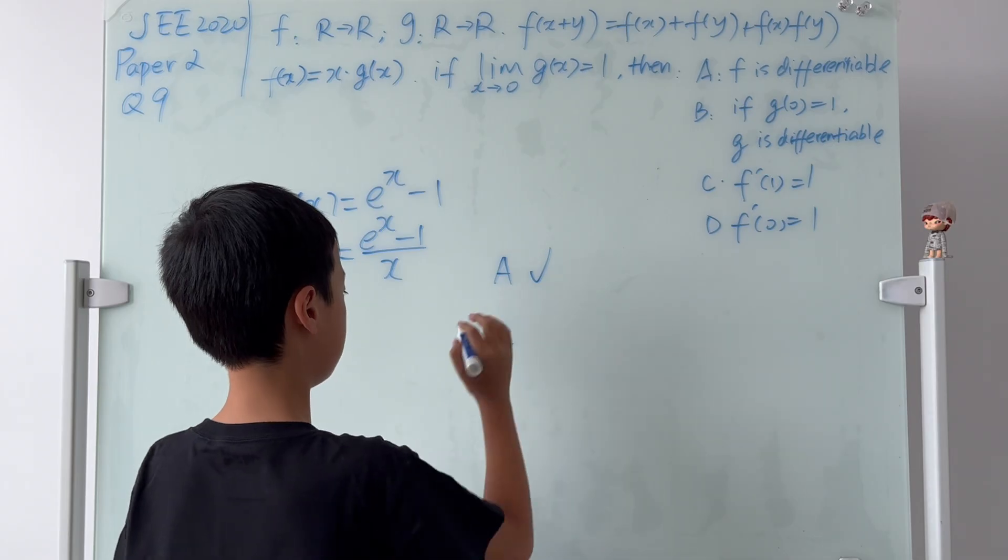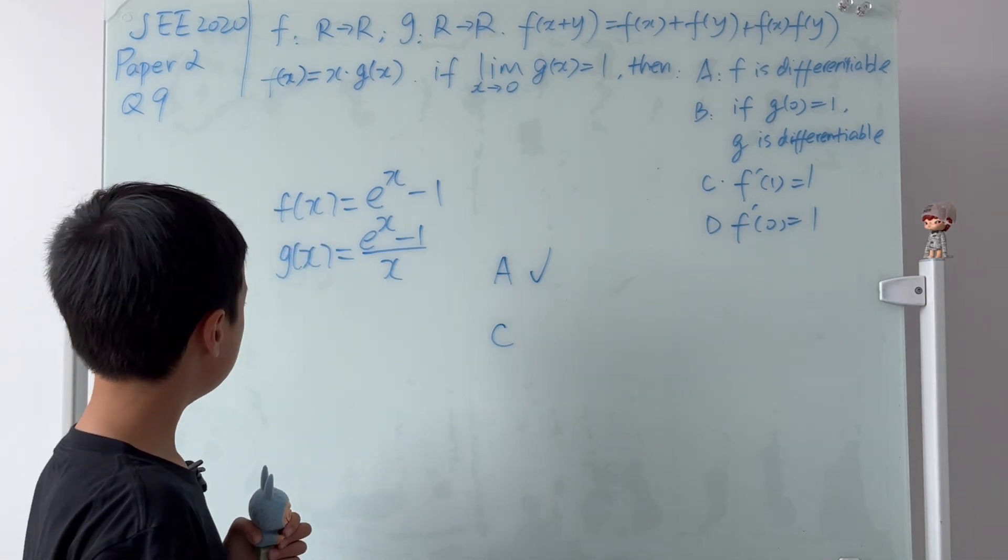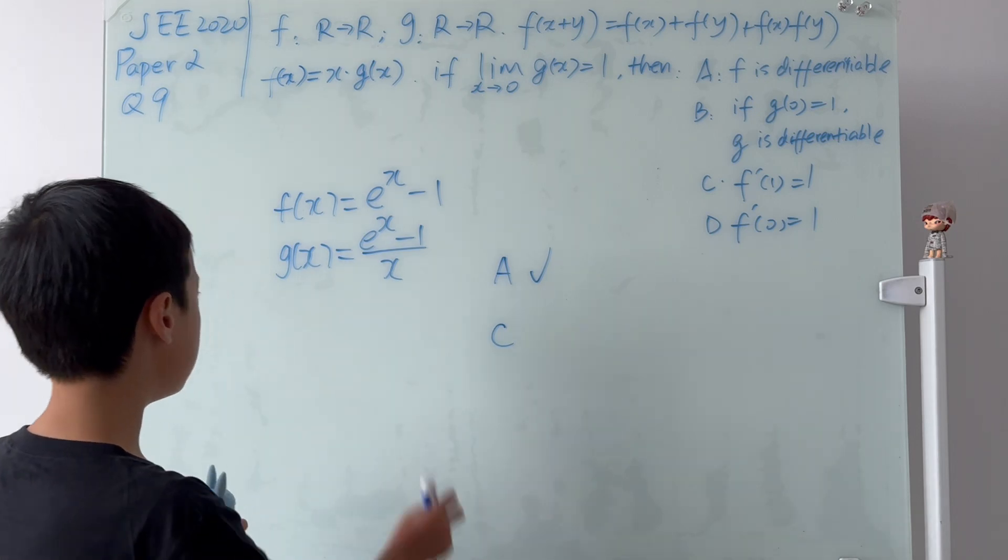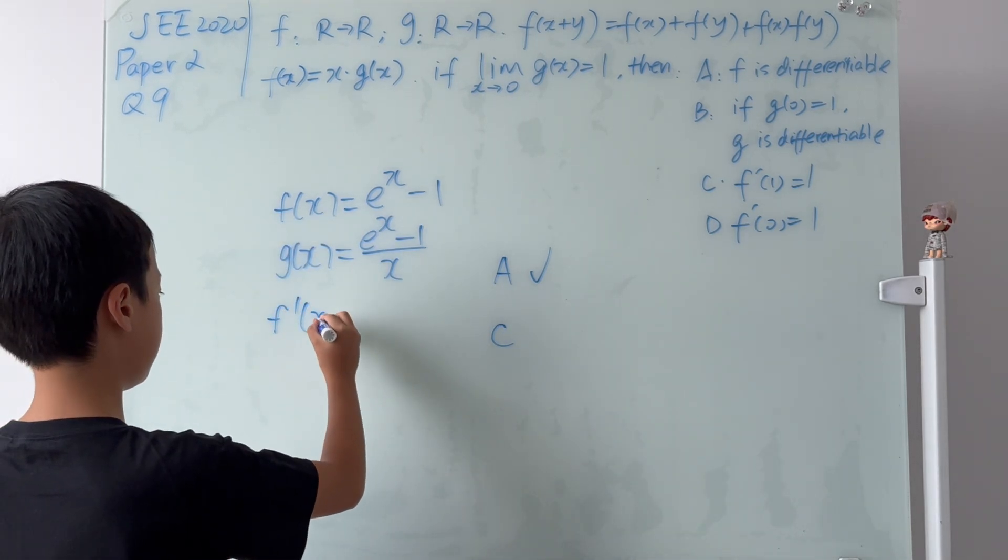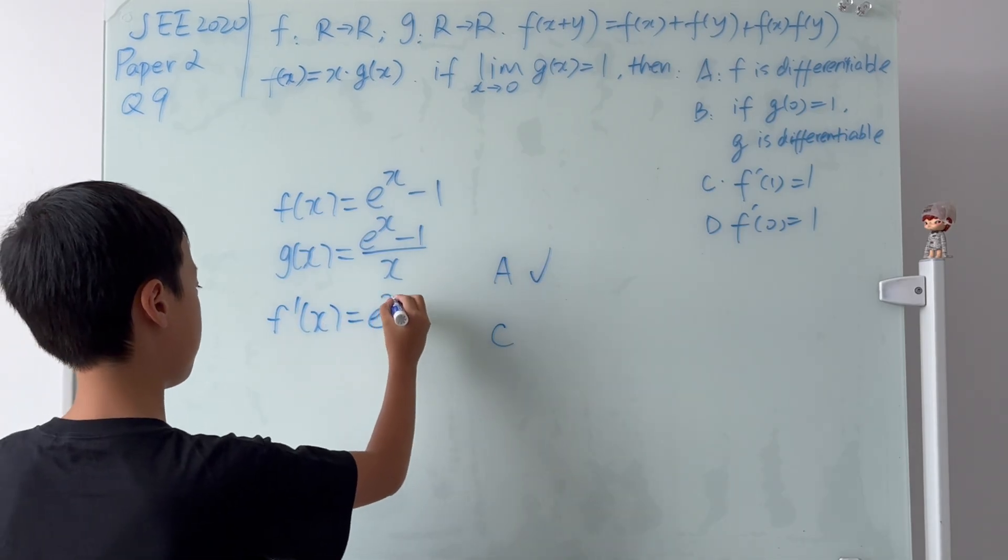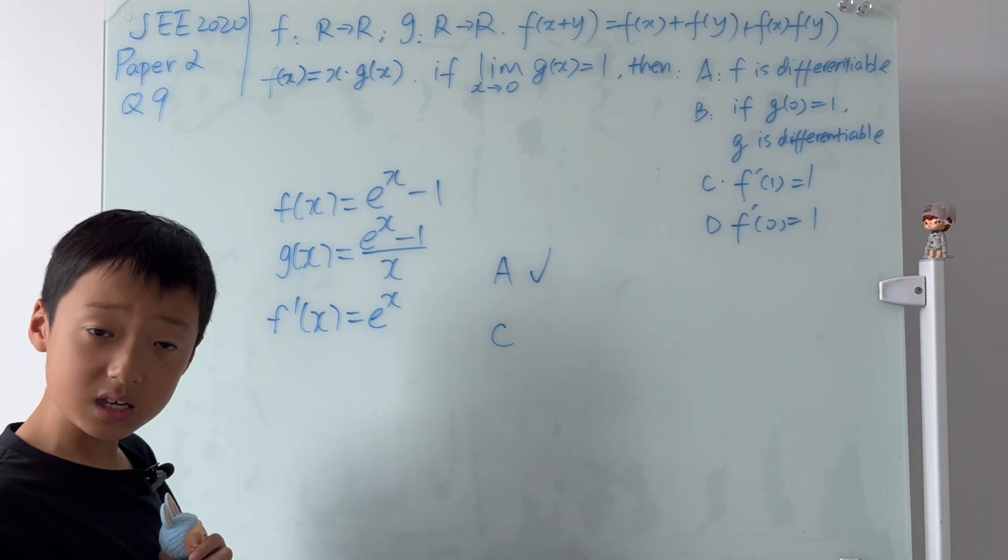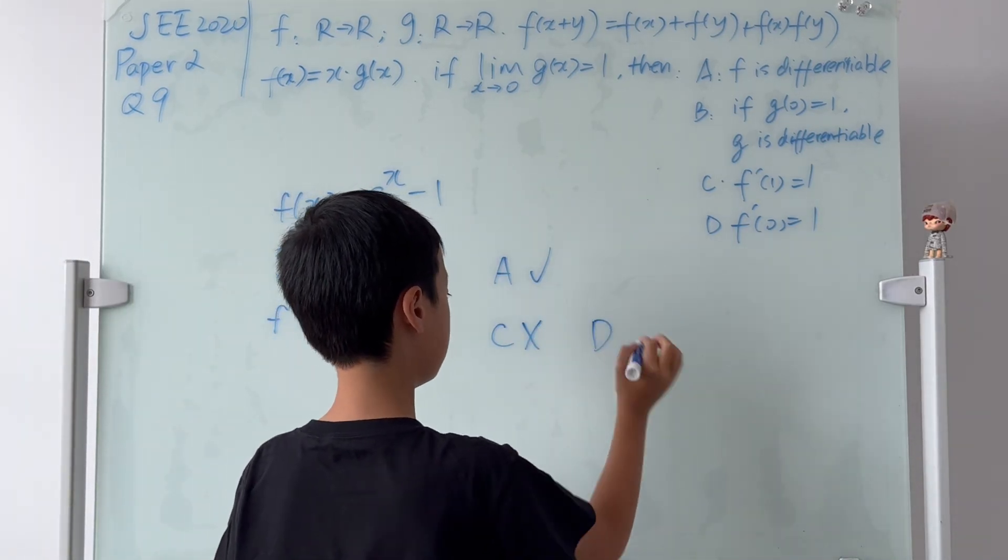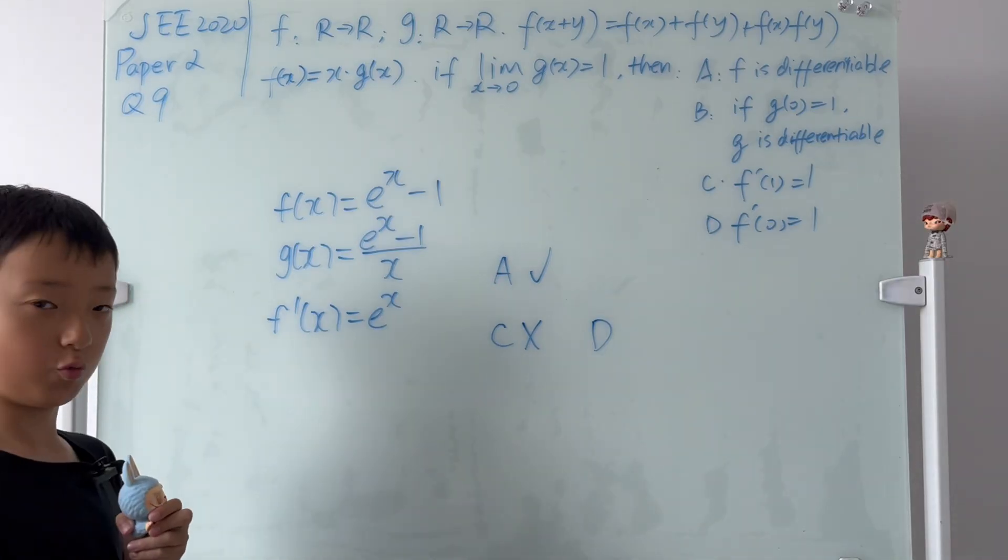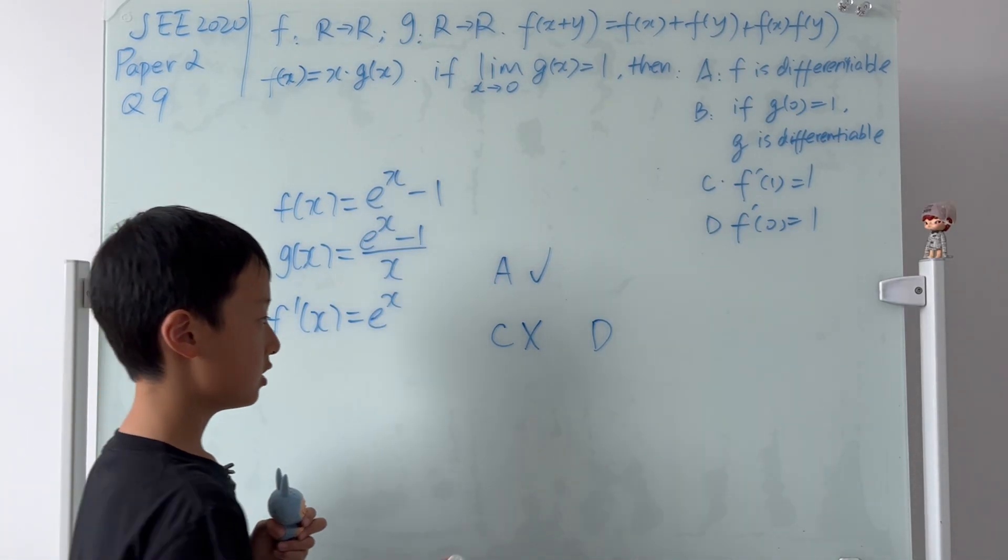c: f'(1) is equal to 1. Why don't we just take the derivative of f(x)? So we know that f'(x) is equal to e^x. If we sub in 1, it's not 1, it's e. So c is wrong. d: f'(0) is equal to 1. Plug in 0 here. e^0 is 1. So d is correct.